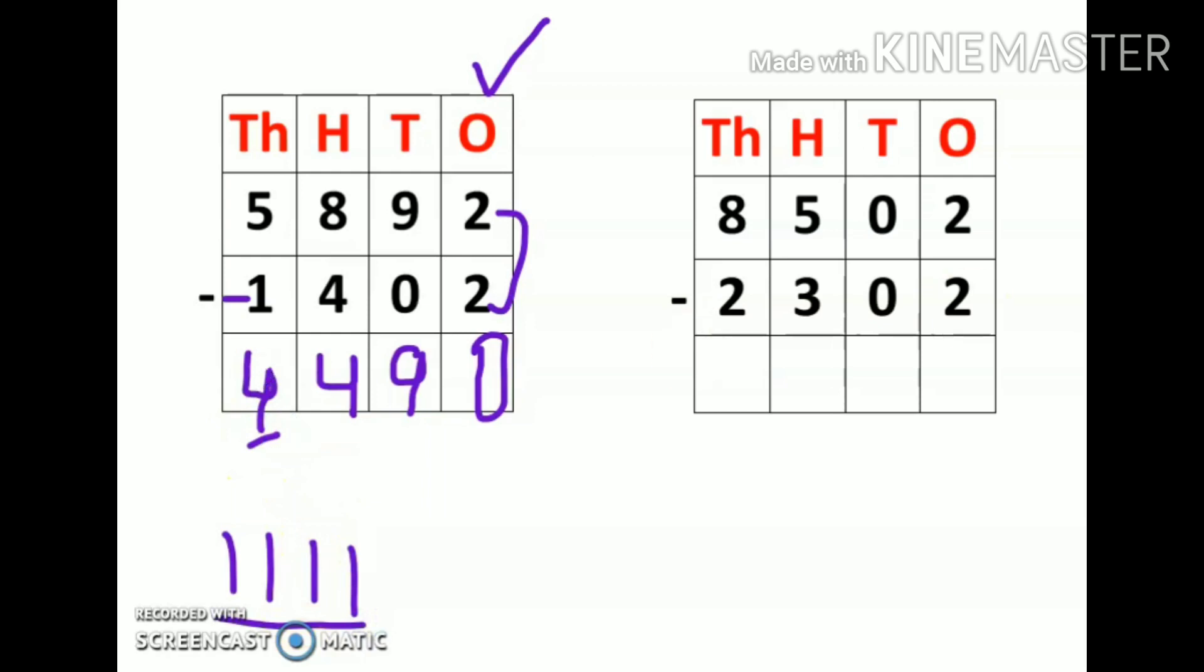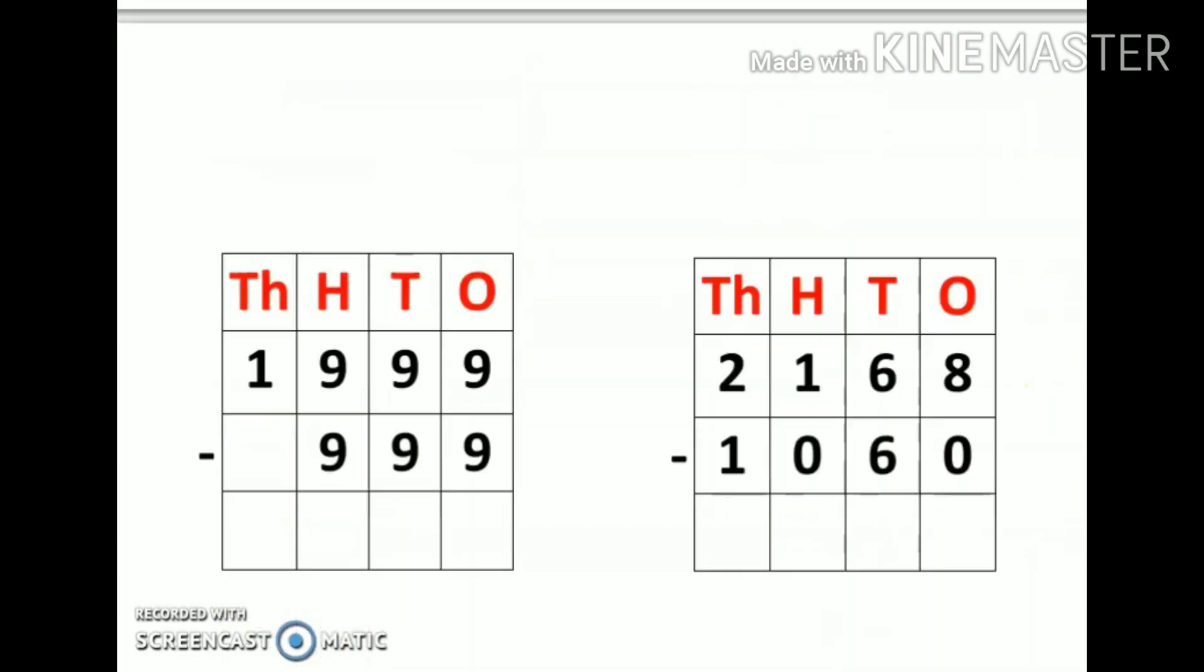Next question. I will start from ones place. Two minus two is zero, zero minus zero is again zero, five minus three is two. Start from the next number: four, five, so my answer is two. Now eight minus two: three, four, five, six, seven, eight. Six fingers are up, so eight minus two is six. So my answer is 6,200.